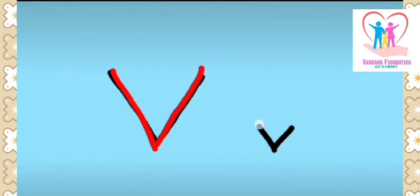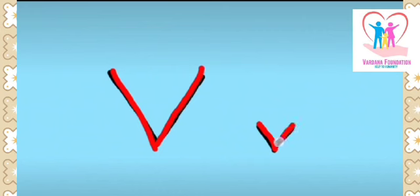To make small letter V: slant line from left to right bottom, and then one more slant line from right top to left bottom. And this would be small script letter V.